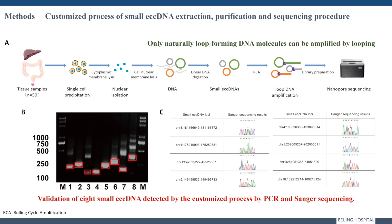We established a customized procedure for ECC-DNA nanopore sequencing, as shown in figure A, including nucleus isolation, loop DNA amplification, nanopore sequencing, and finally obtaining the ECC-DNA profiles in tissue cells. Only naturally formed circular DNA can be amplified and sequenced, and the identified ECC-DNAs can be further validated by PCR and Sanger sequencing.